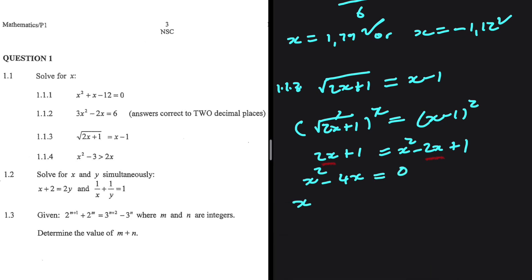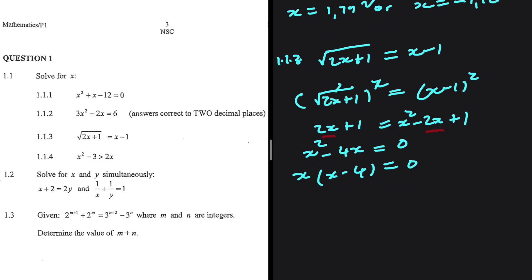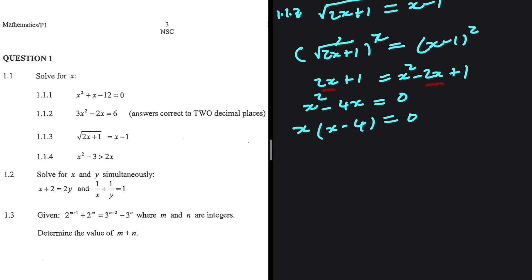So x squared minus 4x equals 0. We're going to take x as a common factor, and we're going to have x times x minus 4 equals 0. In this case, it's either x equals 0 or x equals 4.